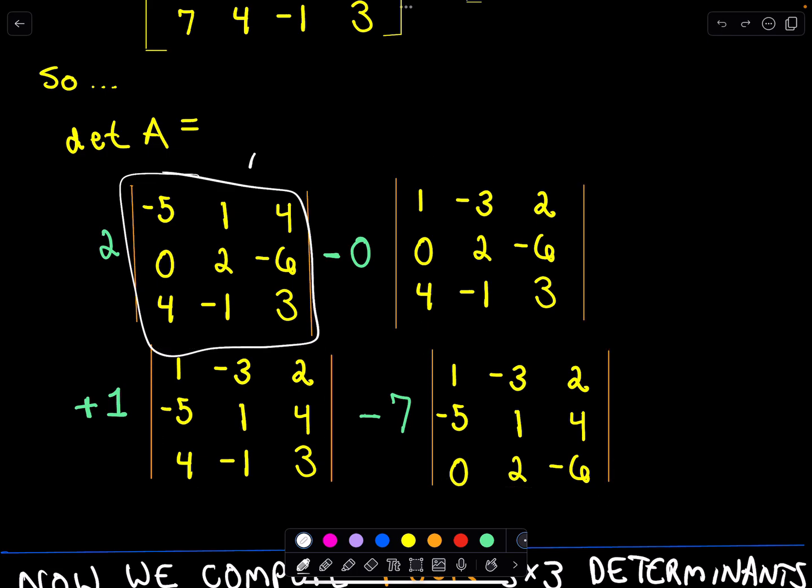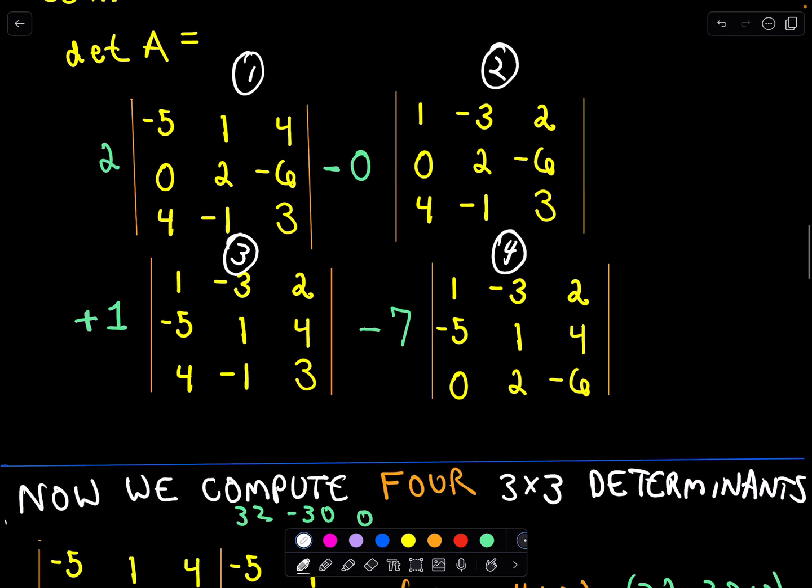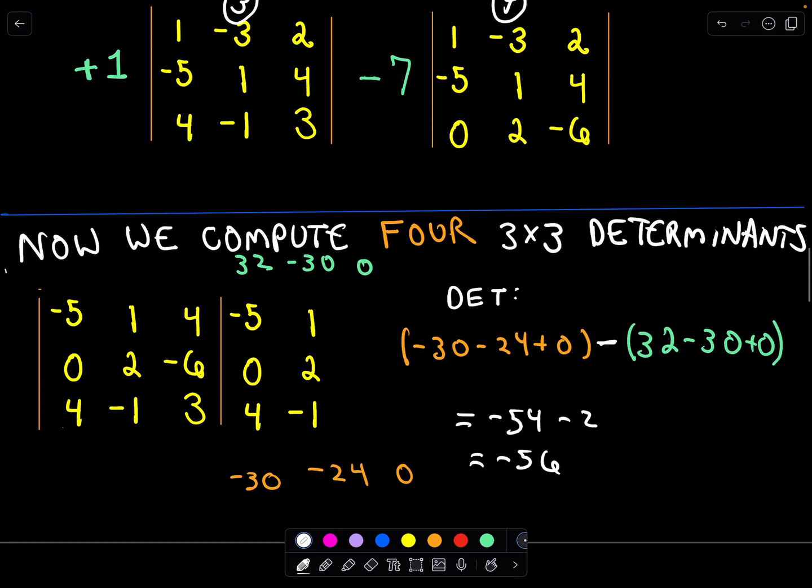So now we've got 1, 2, 3, 4 smaller determinants to figure out. And at this point, well, now we're back to computing the determinant of a 3x3 matrix. Hopefully you recall that. If not, I'll show you one example. So we'll just work on this first one. Let's figure out the value of that determinant.